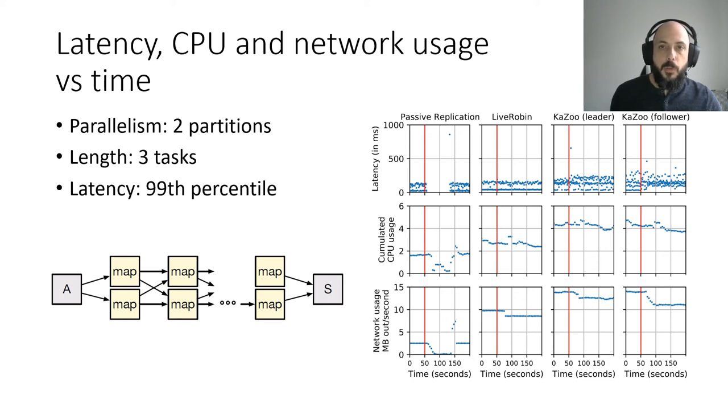We focus first on the 99th latency percentile. For the regular passive replication algorithm, we can see the unavailability duration, almost 90 seconds. Furthermore, as some events were still in flight during the crash, more time is needed when the job is restarted before coming back to the regular flow.